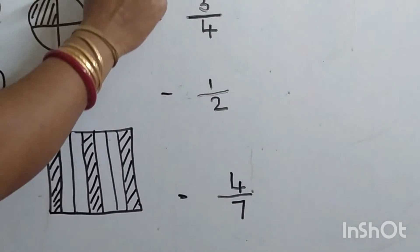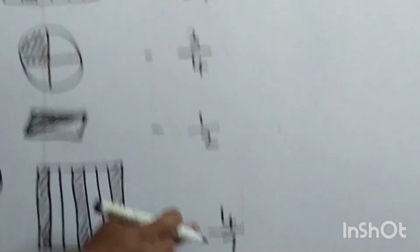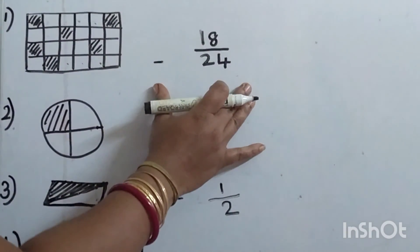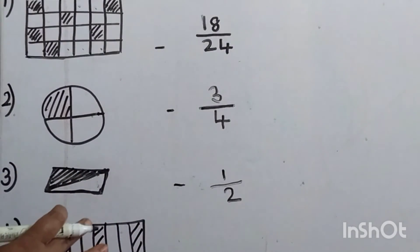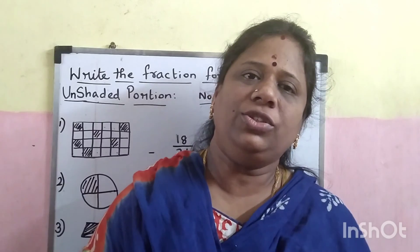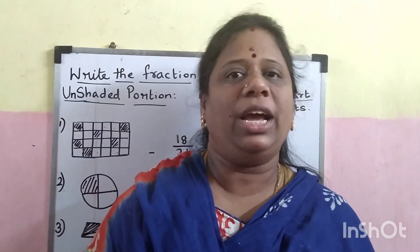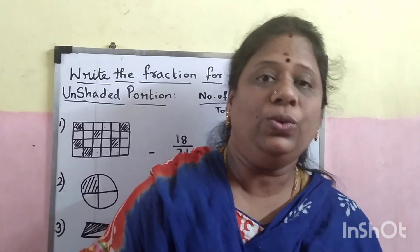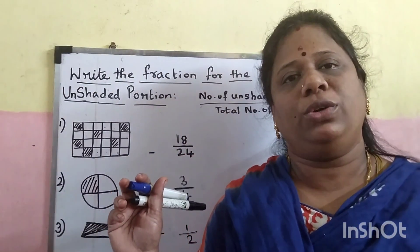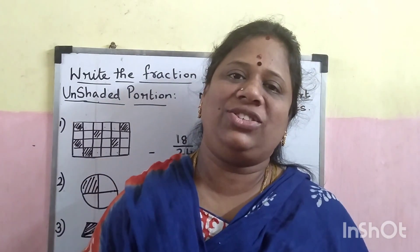Children, understood? The fractions were: 18 by 24, 3 by 4, 1 by 2, and 4 by 7. This is how we represent fractions for the shaded and unshaded parts. Today, we learnt how to write fractions for the shaded and unshaded portions. I hope you all understood and enjoyed the class. I will give you homework — when I send this video, I will send the homework too. Please write it in your classwork. See you all in the next class, children. Thank you.